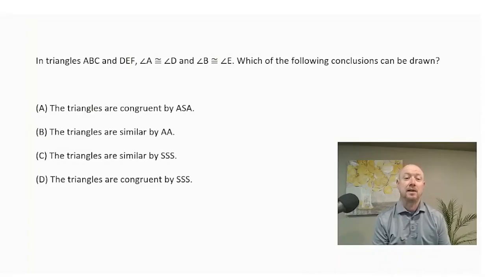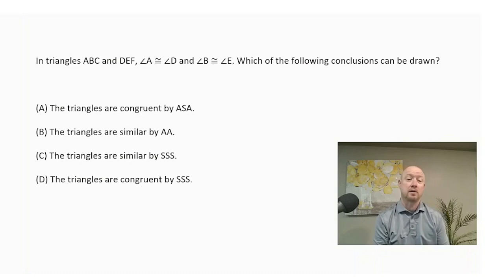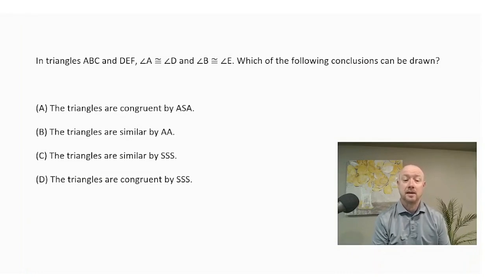In triangles ABC and DEF, Angle A is congruent to Angle D and Angle B is congruent to Angle E. Which of the following conclusions can be drawn? A, the triangles are congruent by Angle-Side-Angle. B, the triangles are similar by Angle-Angle. C, the triangles are similar by Side-Side-Side. D, the triangles are congruent by Side-Side-Side.